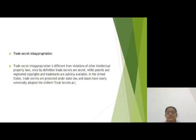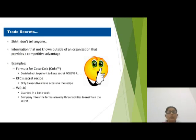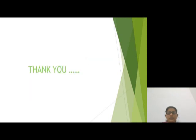The fourth and last is trade secret misappropriation. A trade secret — such as a secret formula for a product — is different from violations of other intellectual property laws, since by definition it is kept secret, while patents, registered copyrights, and trademarks are publicly available. An example is Coca-Cola: the formula for Coca-Cola is known only by the Coca-Cola company. This is called trade secret misappropriation. Thank you.